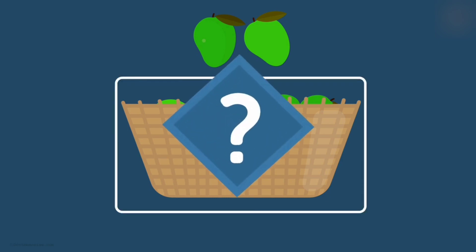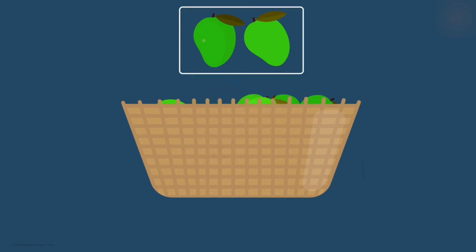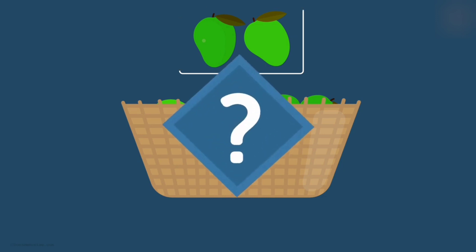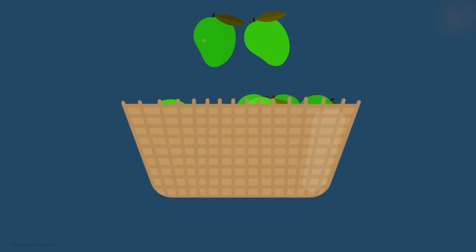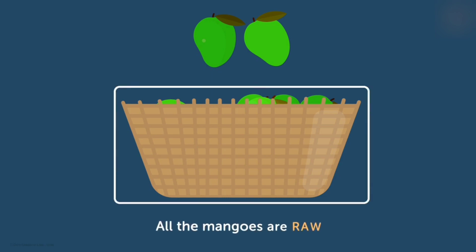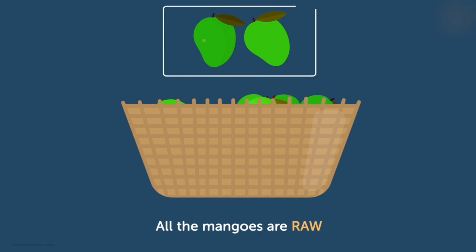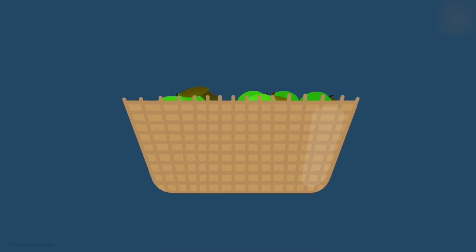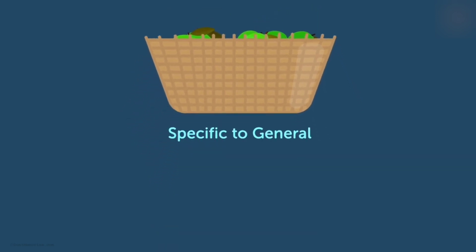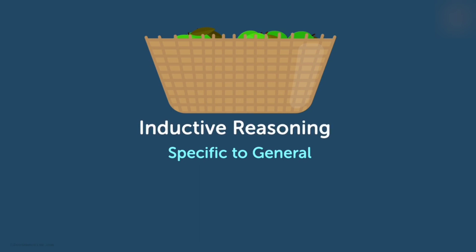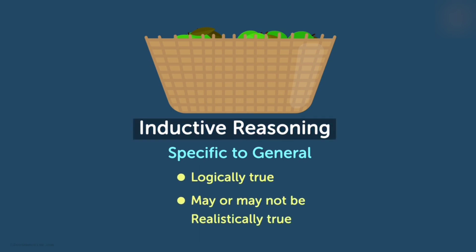What exactly are we doing here? We examined a couple of mangoes in the basket and accordingly arrived at a general conclusion. The conclusion is that we generalize the idea by saying all the mangoes in this basket are raw. So by observing a specific outcome of the experiment, we concluded the observation in a generalized form. This approach of reasoning from specific to general is called inductive reasoning. Inductive reasoning is logically true but may or may not be realistically true.